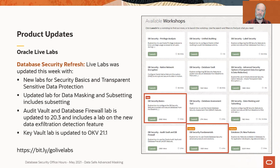We have updated the audit vault and database firewall to the current version 20.3, and we've updated key vault to 21.1. We have a new lab for transparent sensitive data protection, and we've updated many of the other labs including the data masking and subsetting lab, which now includes a new section on subsetting, and the audit vault and database firewall lab which includes a new section on the 20.3 capability to detect data exfiltration attempts.